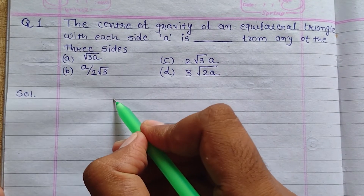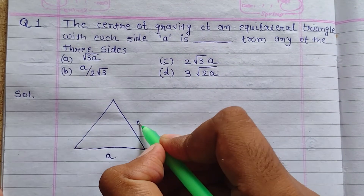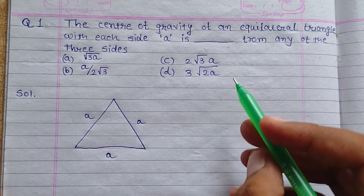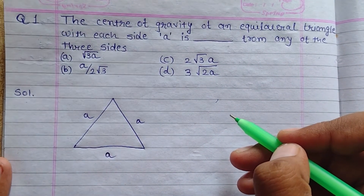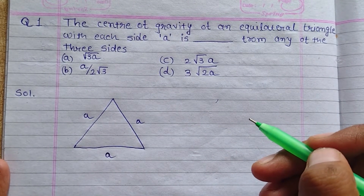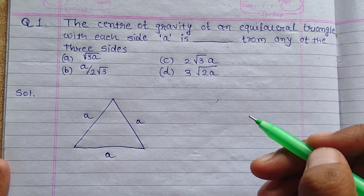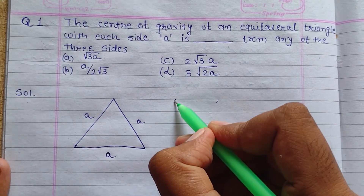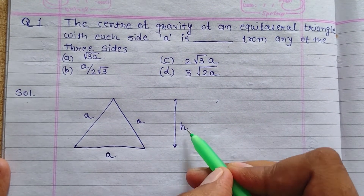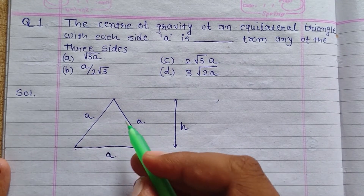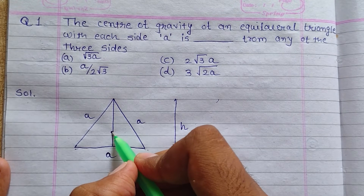Let's draw the equilateral triangle first, having side 'a'. We know that in the case of any triangle, the center of gravity lies at a distance of h/3 from the base, where h is the height of the triangle. So our CG lies at a distance of h/3 from the base. Let's join this line — this is our CG.